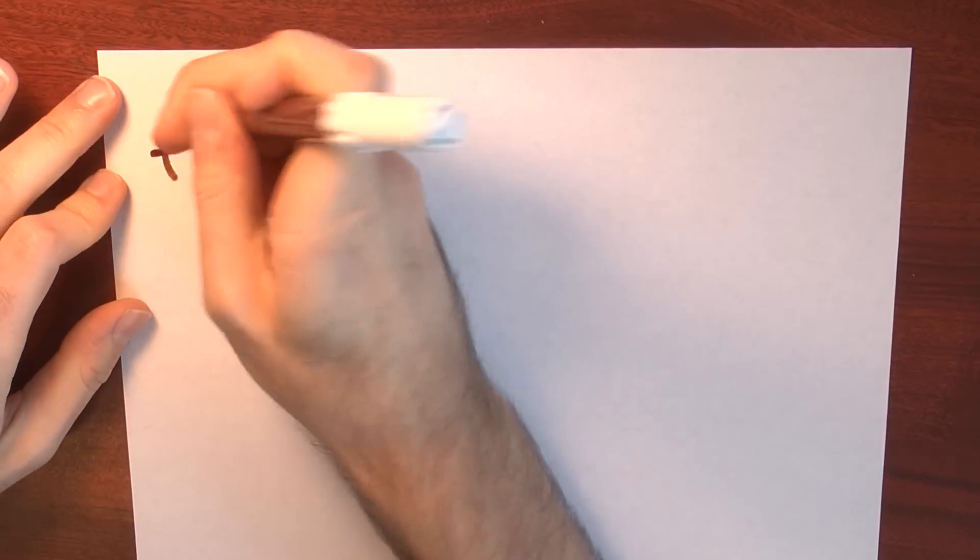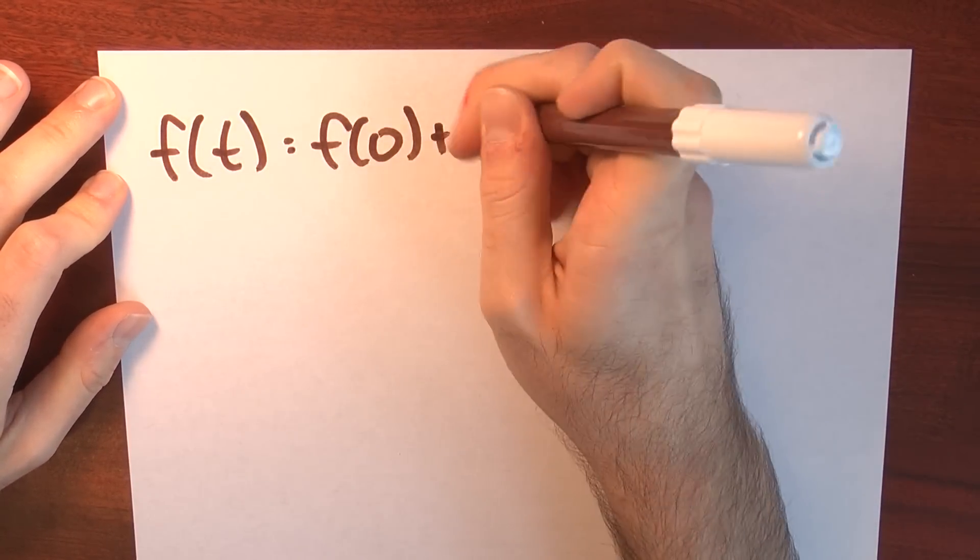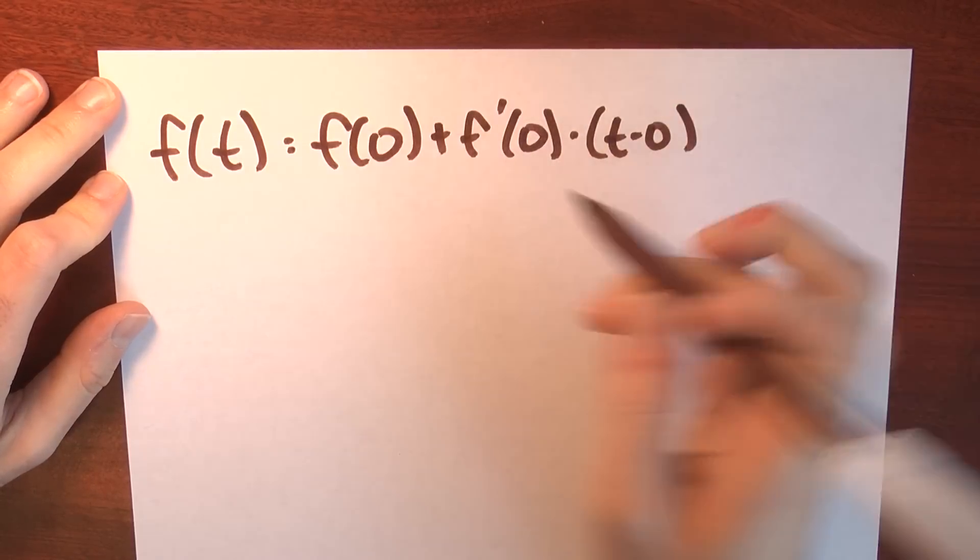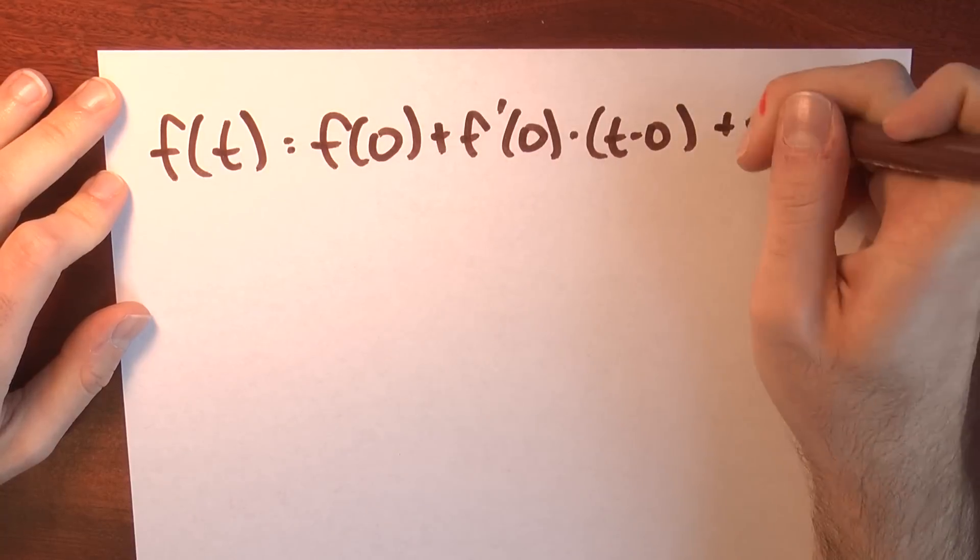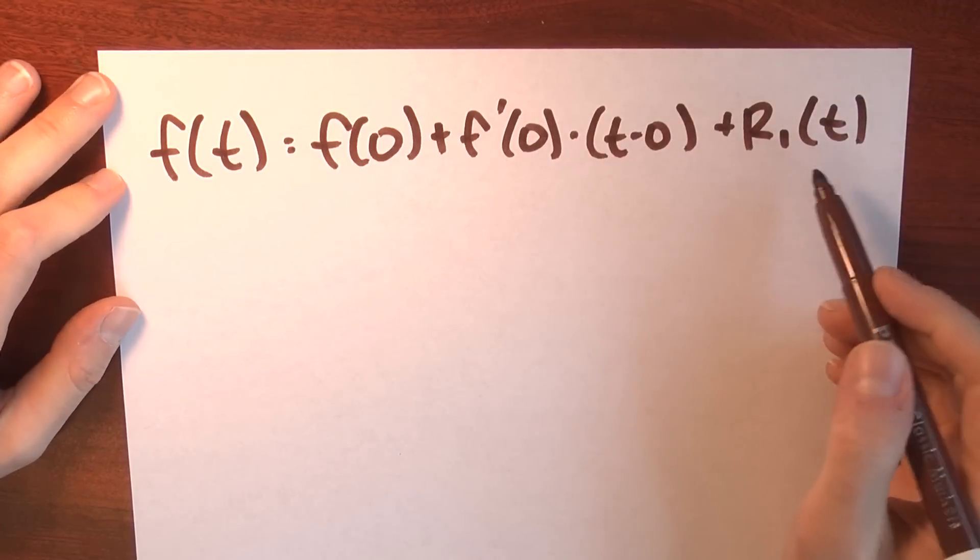So I'll write this down. f of t is f of 0 plus f prime of 0 times t minus 0, right? Those are the first two terms in the Taylor series expansion for f. Plus r sub 1 of t, this is the remainder term.